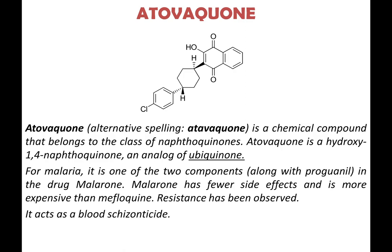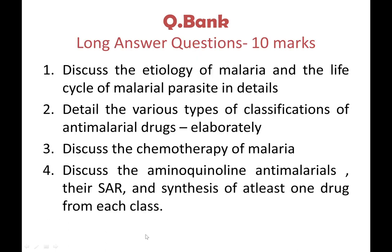Atovaquone is a chemical compound belonging to the class of naphthoquinones — a hydroxy-1,4-naphthoquinone also called ubiquinone — with a parachlorophenyl moiety. For malaria, it is one of two components along with proguanil in the drug Malarone, marketed by GSK. It has fewer side effects but is more expensive than mefloquine. Resistance has been observed. It acts as a blood schizonticide.